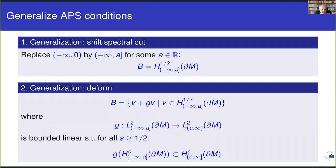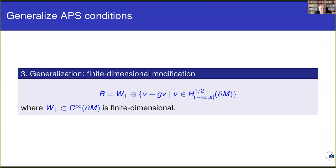The third step is that we additionally allow adding or subtracting finite-dimensional subspaces. So we may take such a graph as described and then add a finite-dimensional space consisting of smooth functions. These are the three allowed modifications: a spectral cut at any value, deformation by a graph map G, and finite-dimensional modifications.